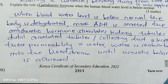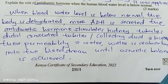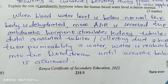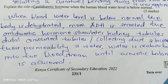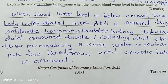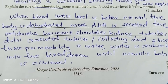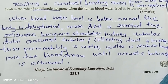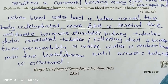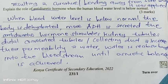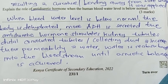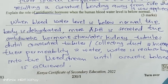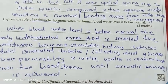Explain the role of antidiuretic hormone when the human blood water level is below normal. Antidiuretic hormone is released to increase permeability of the kidney tubules to water. When blood water level is below normal and the body is dehydrated, more ADH is secreted, stimulating the kidney tubule and collecting duct to increase their permeability to water, so that more water is reabsorbed into the bloodstream until osmotic balance is reached.